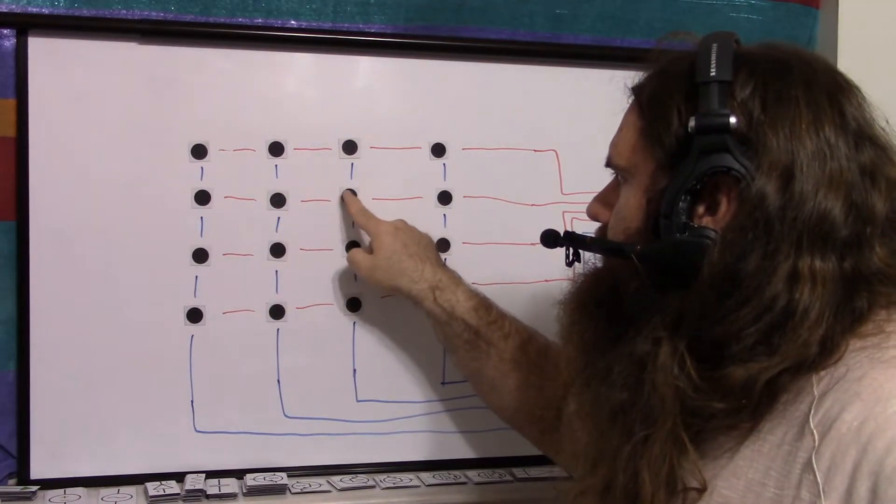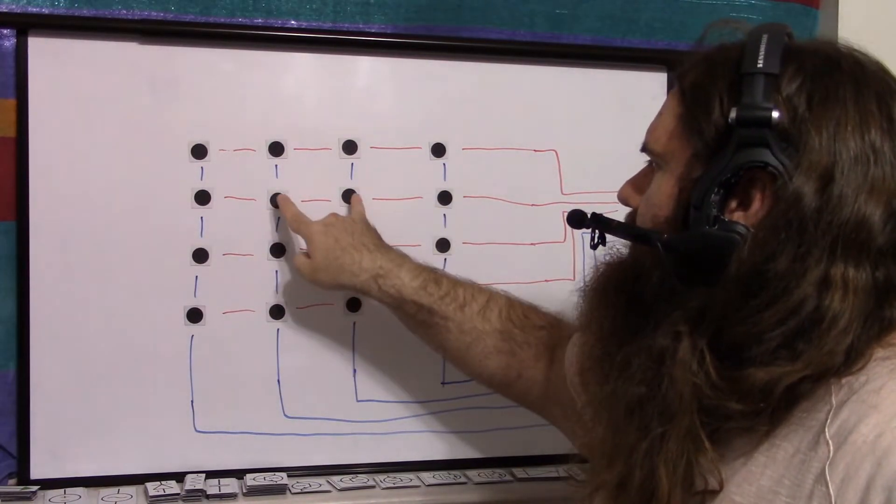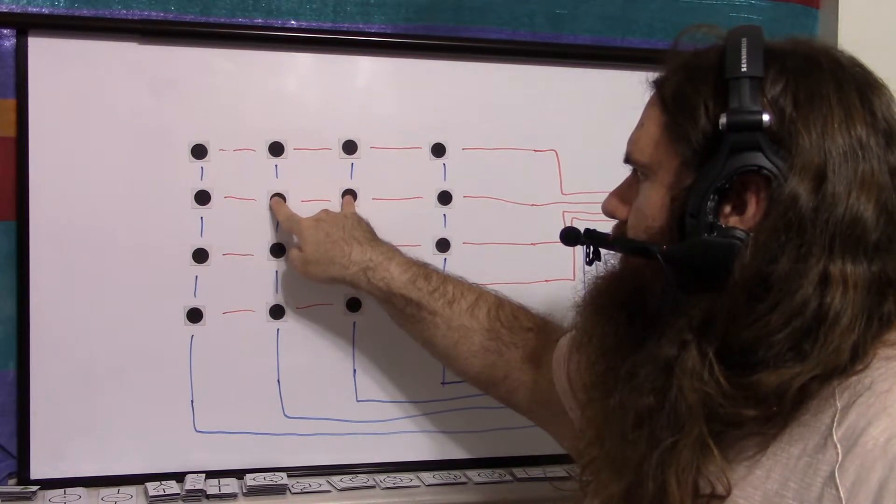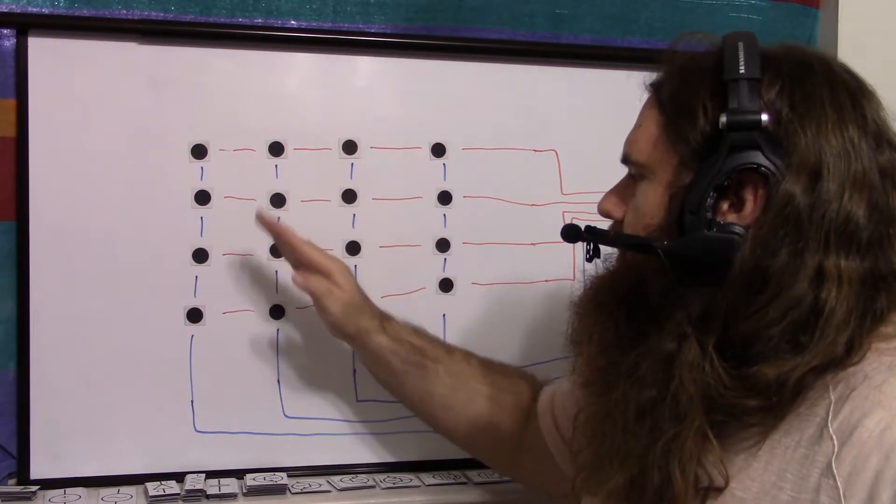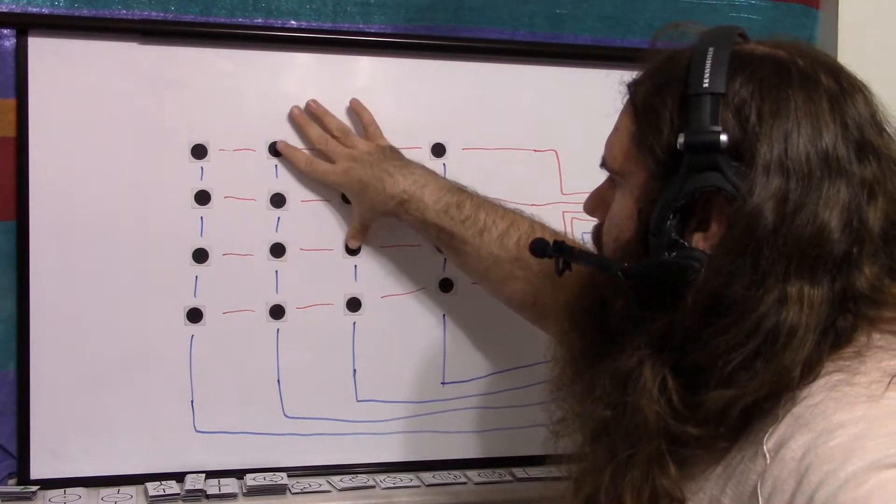So the maximum you can reliably read is two. If you power this row here, row two, and you're pressing two different buttons on that row, you'll be able to detect that because they're on different columns. The same if they're diagonal from each other.